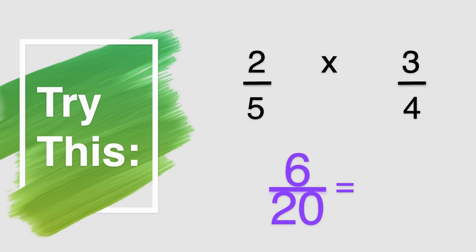Well, if you said two, you are correct, boys and girls. When we take two and divide it into six, our numerator now becomes three. And when we take two and divide it into twenty, our denominator now becomes ten.